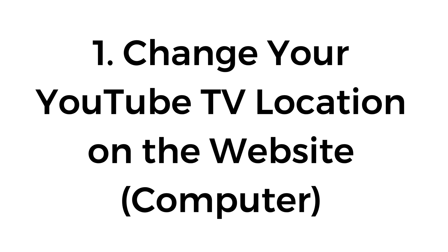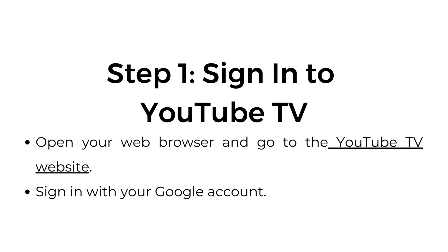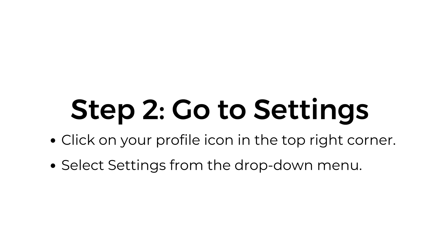Number one: change your YouTube TV location on the website, on computer. Step one, sign into YouTube TV. Open your web browser and go to the YouTube TV website, then sign in with your Google account. Step two, go to settings. Click on your profile icon in the top right corner and select Settings from the drop-down menu.